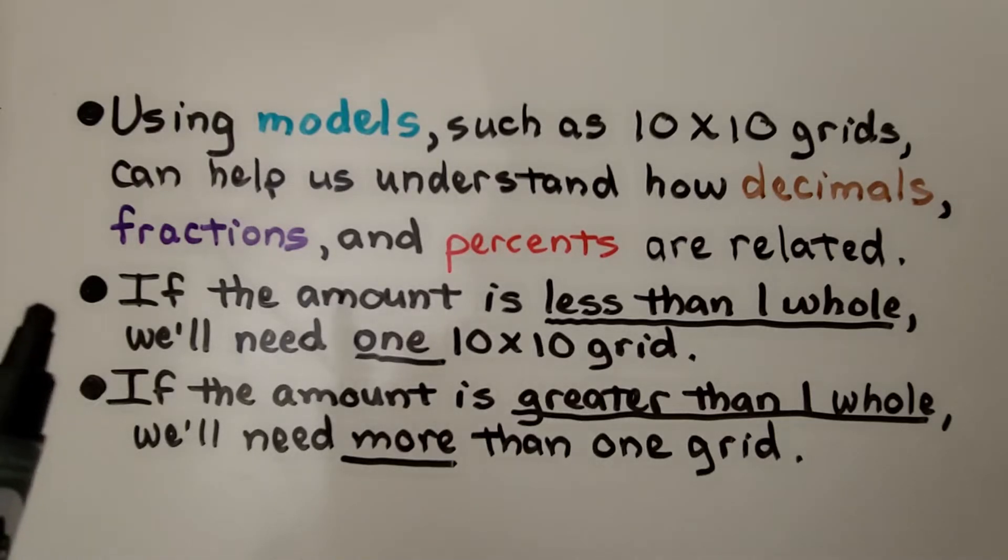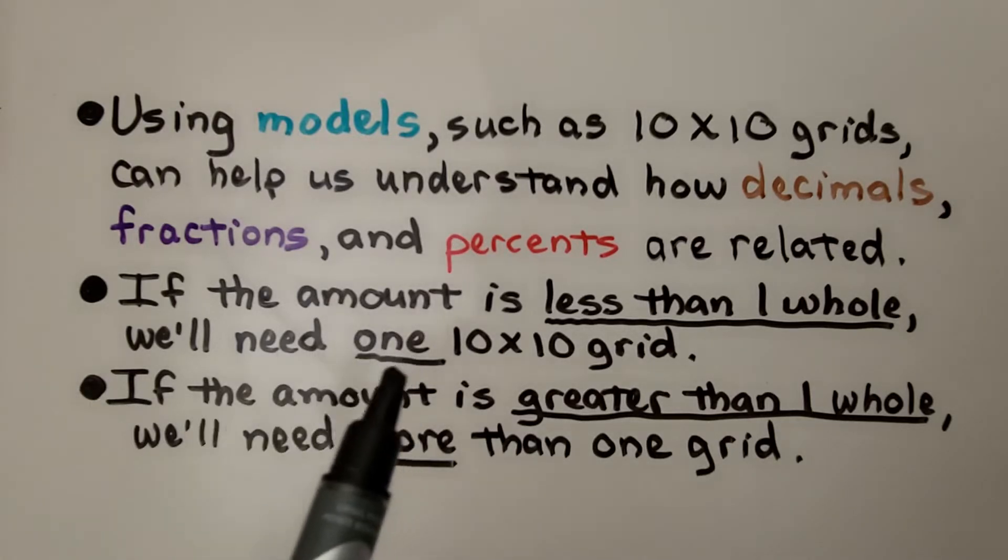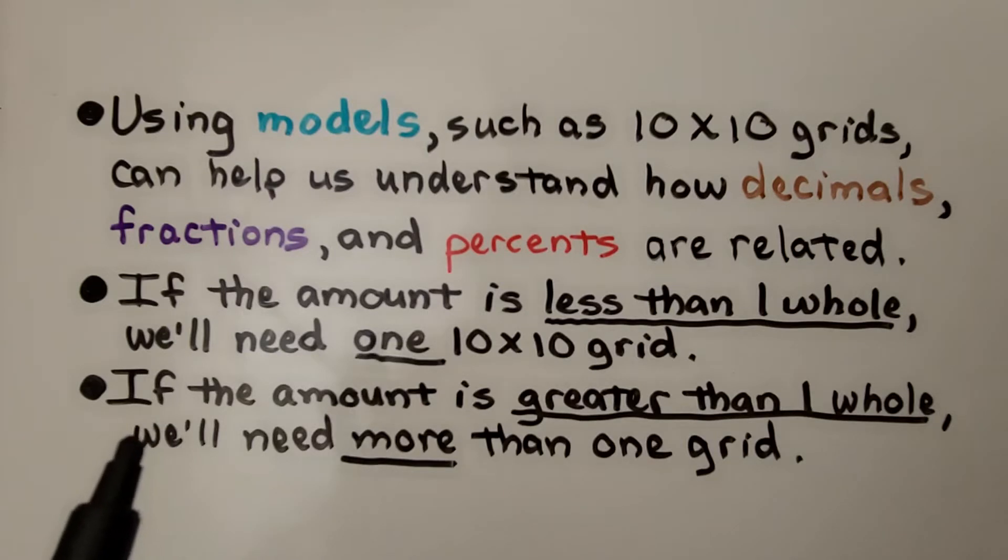If the amount is less than one whole, we only need one 10x10 grid. If the amount is greater than one whole, like a mixed number, we'll need more than one grid.